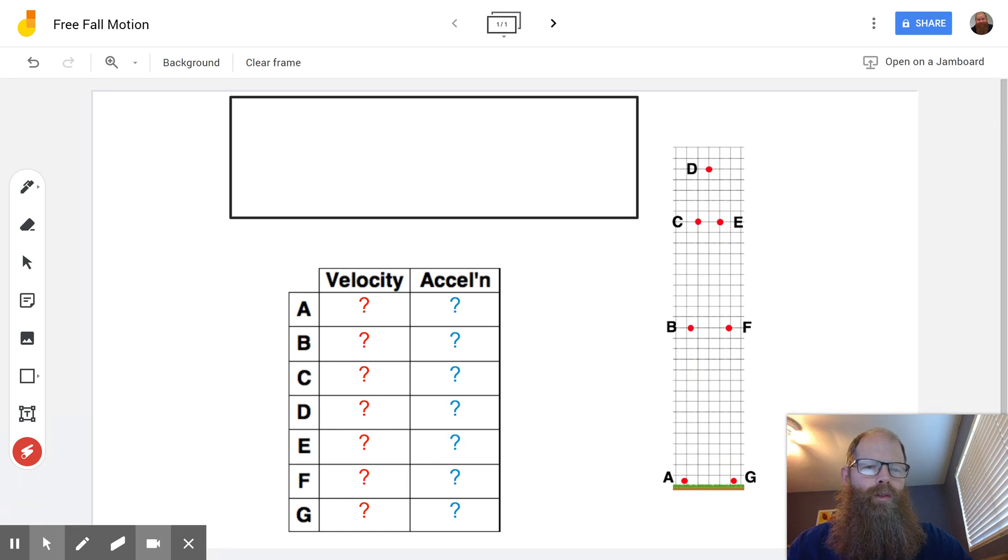The one thing that you always know, you always know that the peak has a speed of zero meters per second. Okay, because it's reached the top, it's slowed down, it's slowed down, it's slowed down, it's stopped for that millisecond and now it's accelerating back down. So that peak is always zero.